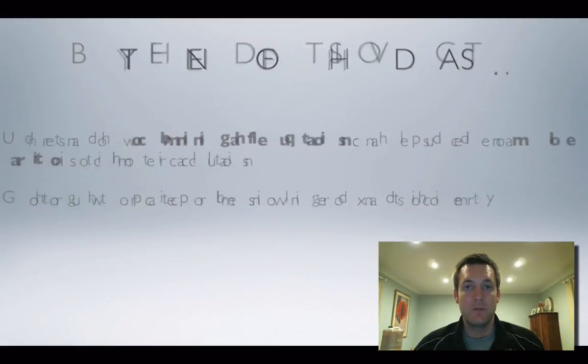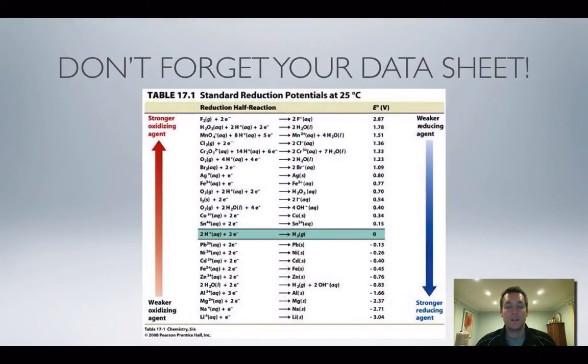There are actually two problems in this film. Before we get started, try to make sure you've got your data sheet handy when doing these sorts of problems. It's not really essential for this film because I'll be putting up the half equations you need, but nine times out of ten you'll be able to do a redox problem using the half equations from your data sheet.